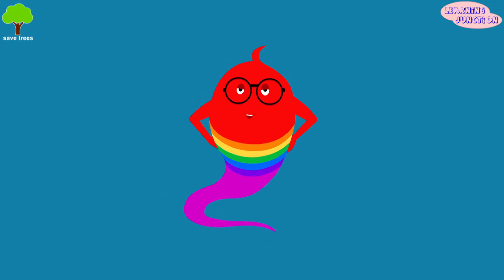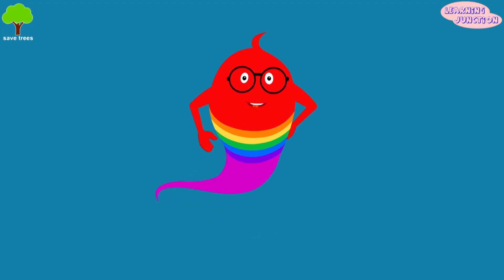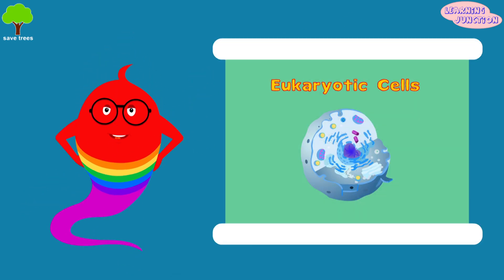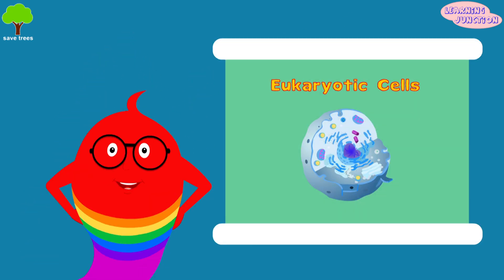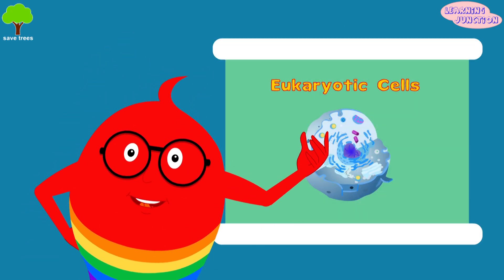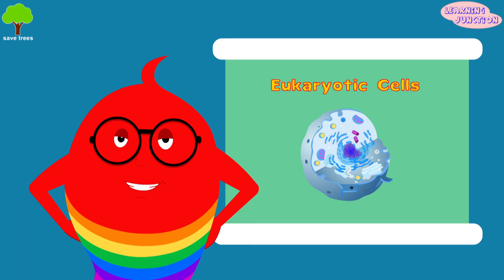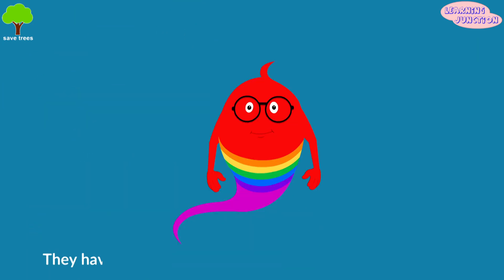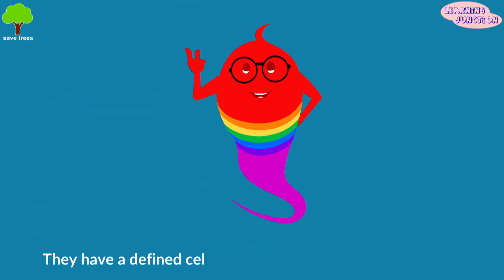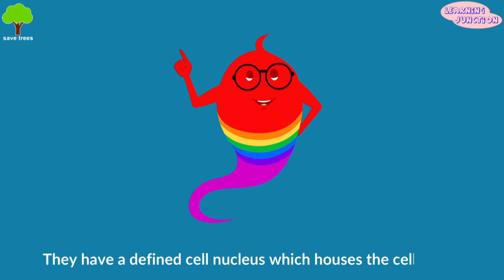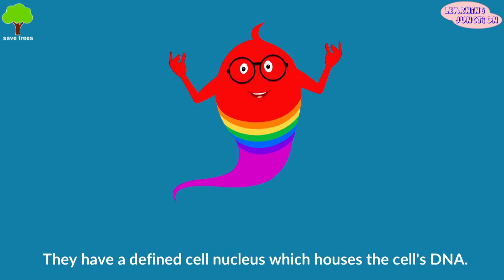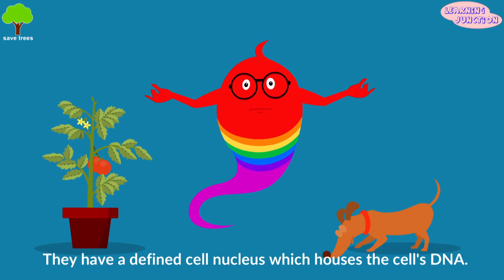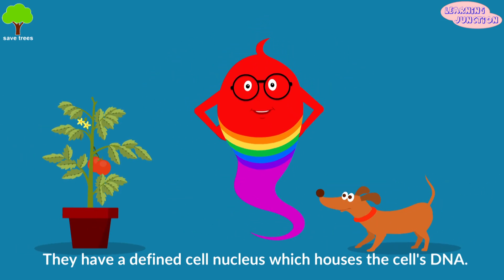Now, we'll learn about the eukaryotic cells. These are typically a lot bigger in size and more complex than prokaryotic cells. They have a defined cell nucleus, which houses the cell's DNA. These are the types of cells we find in plants and animals.